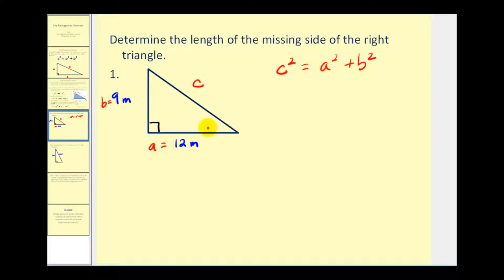Let's go ahead and substitute these values into the theorem, and then we can solve for C. So we'd have C squared equals A squared, or 12 squared, plus B squared, or 9 squared.